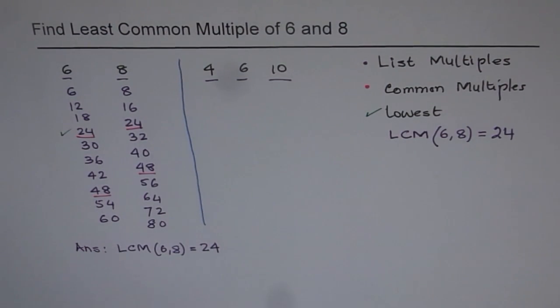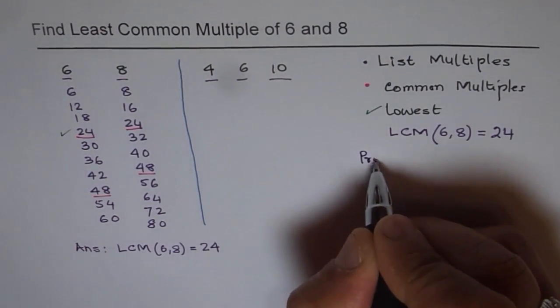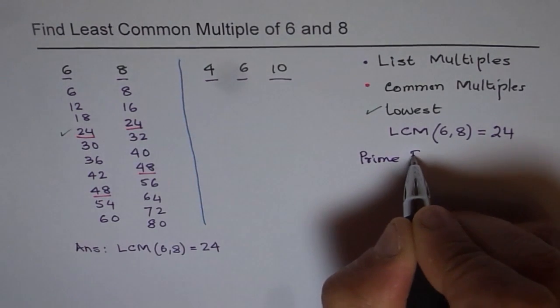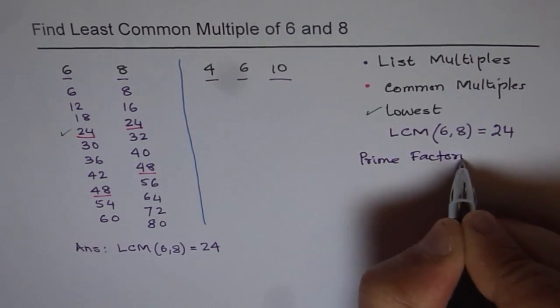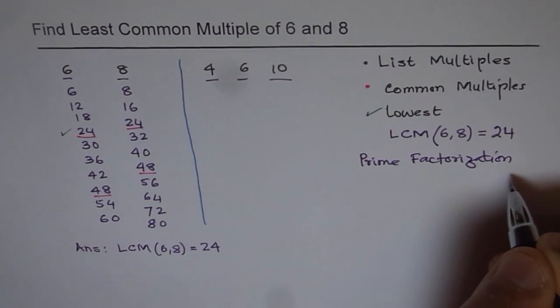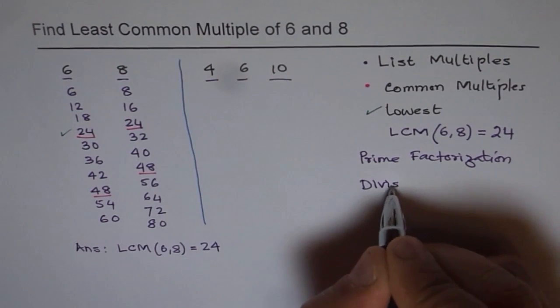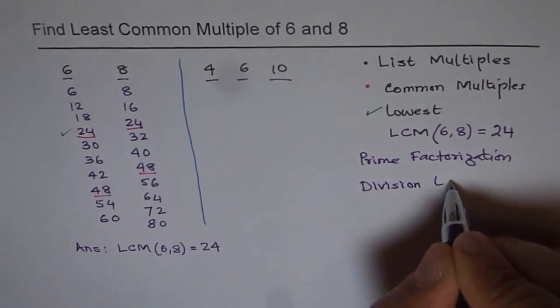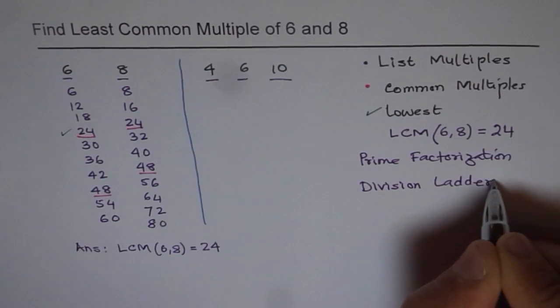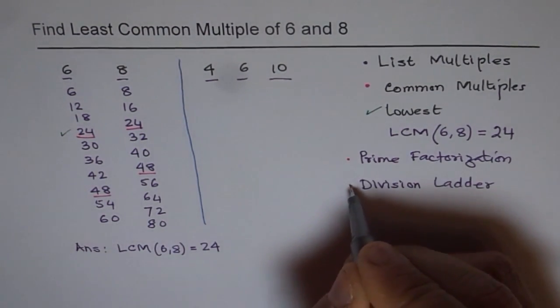So the other methods which we will discuss are called like prime factorization. So by the process of prime factorization, we will find least common multiple. And then we will also talk about division ladder. So these are the two methods which we will discuss in the following videos.